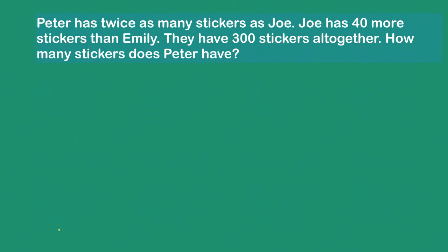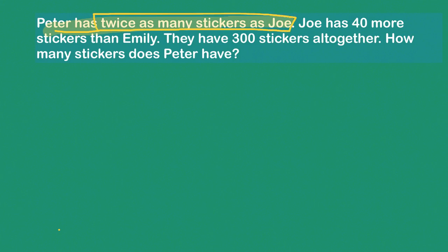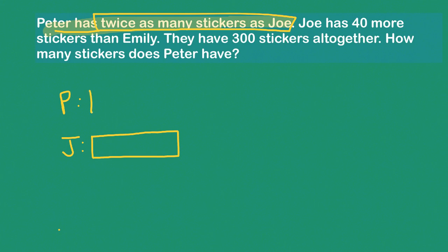So first things first. I want to draw some blocks here. I'm going to draw my Peter block and my Joe block, because it says that Peter has twice as many as Joe. So I'll draw my Joe block — there's Joe — and if Peter has twice as many stickers, he's got a Joe block, same size, except he has that same block twice. He has twice as many.